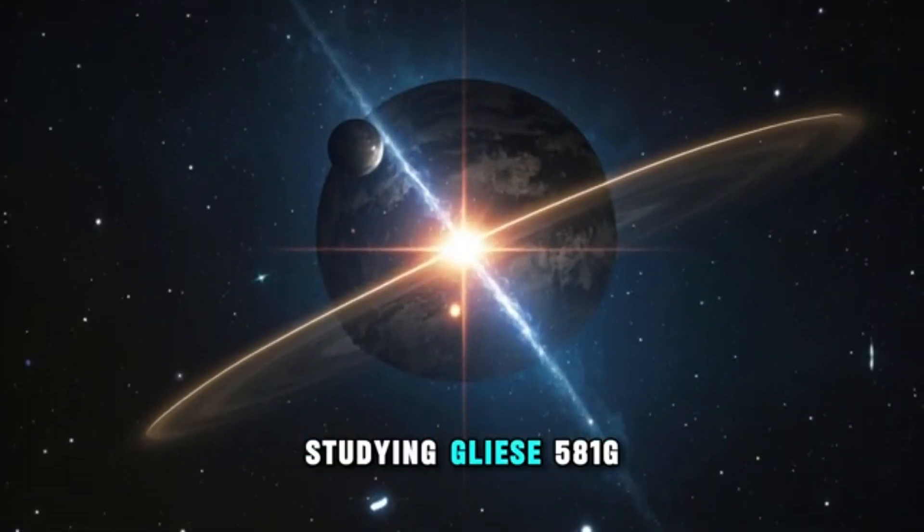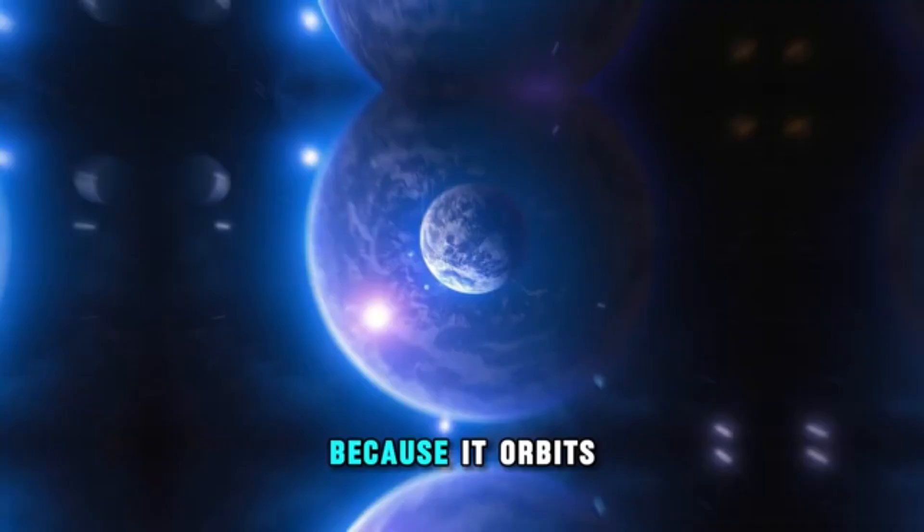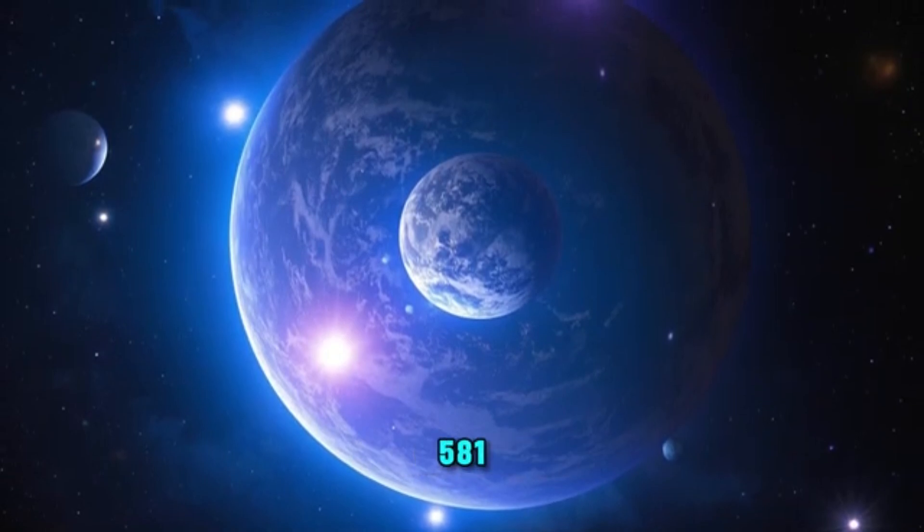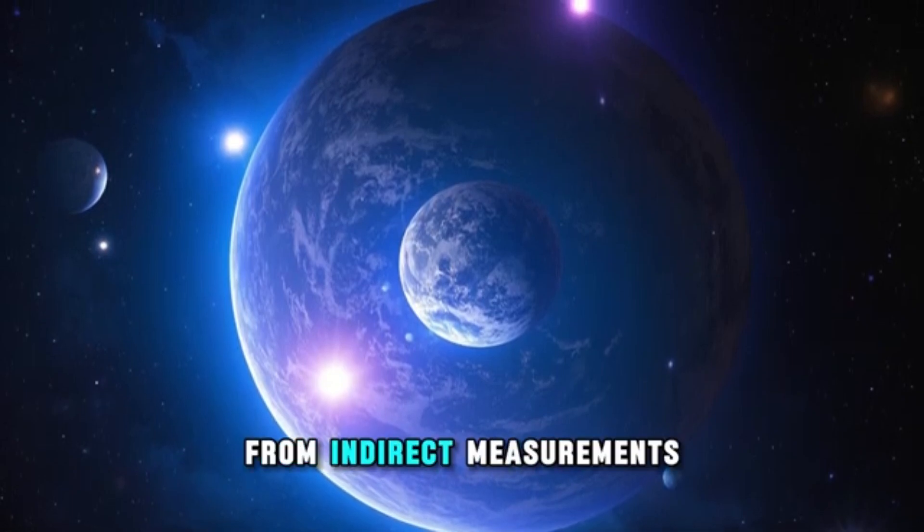One of the main challenges in studying Gliese 581g is its proximity to its parent star. Because it orbits so closely to Gliese 581, the planet is difficult to observe independently, and most of what we know about it comes from indirect measurements.